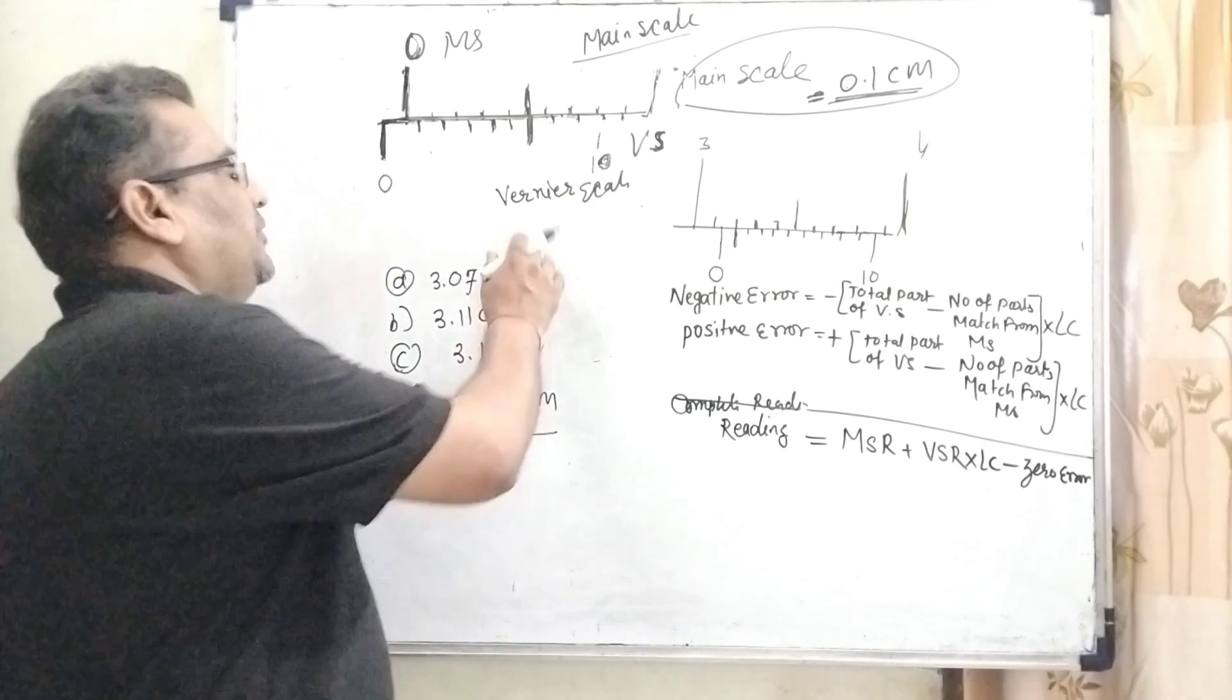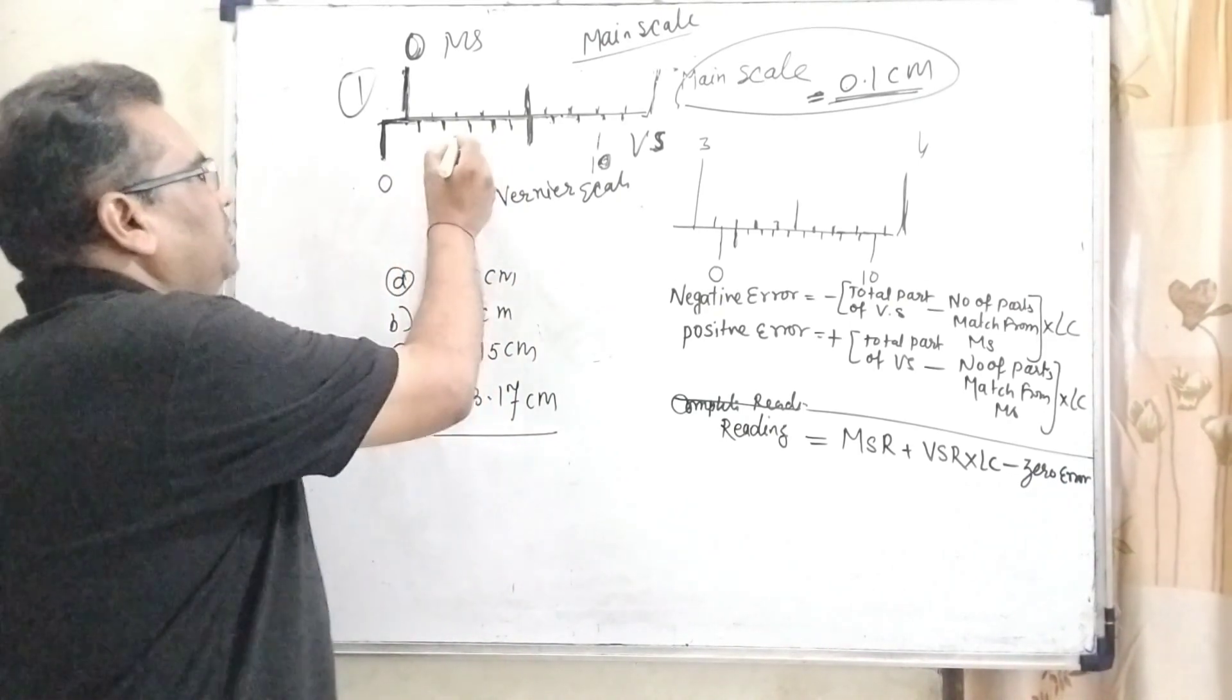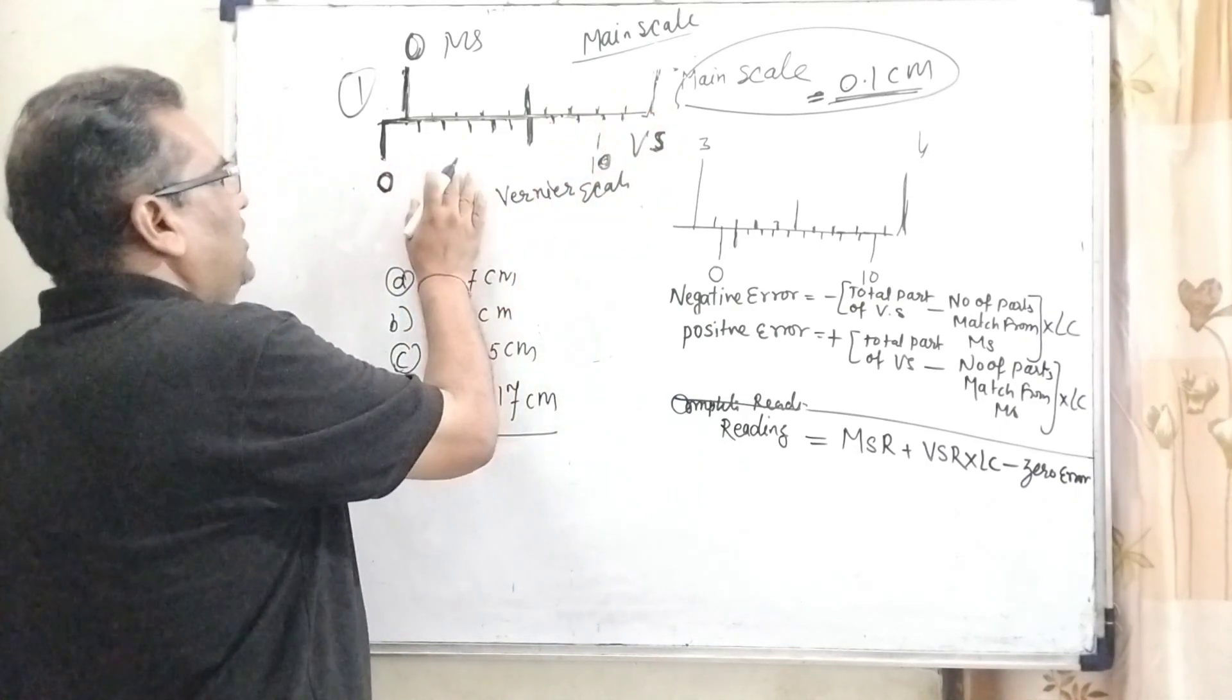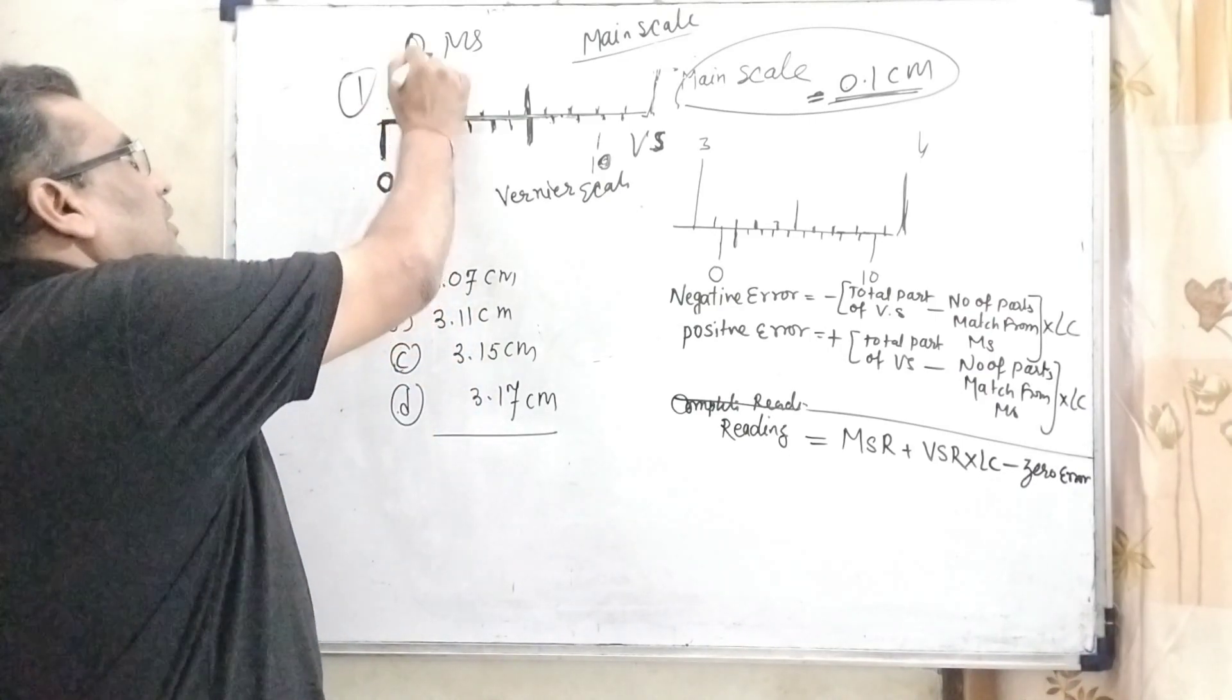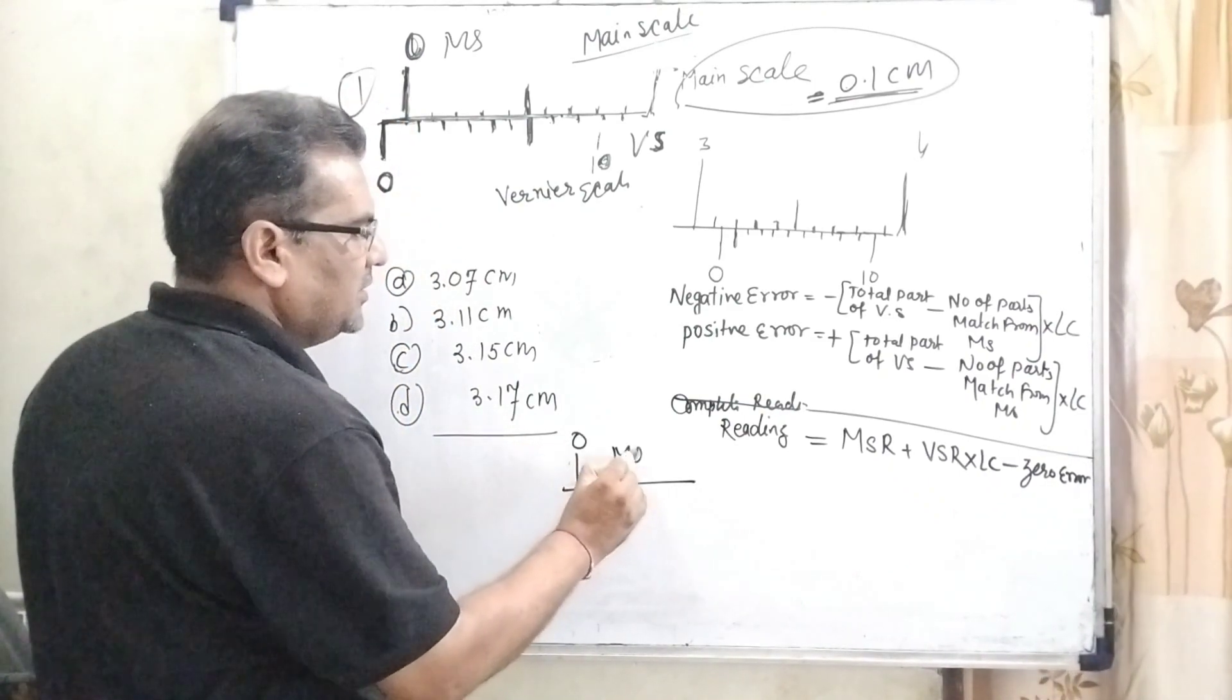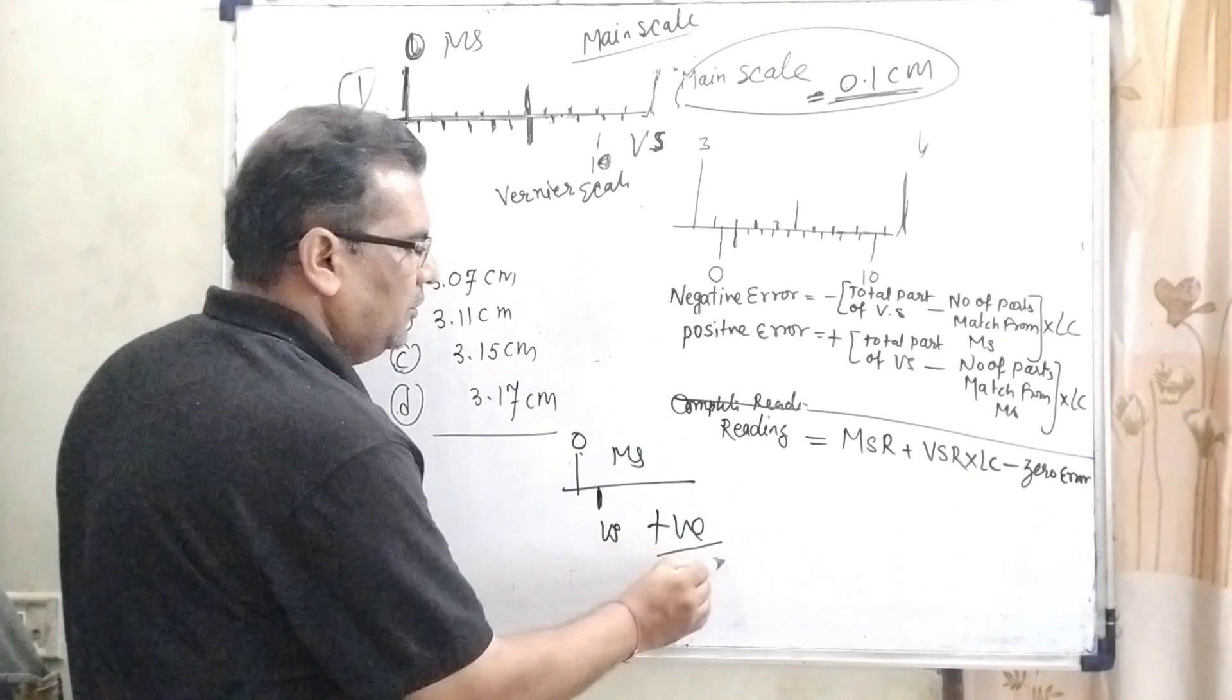Now here, given on the left side, this diagram, the first diagram shows some error. Here the upper scale shows the main scale, lower scale shows the Vernier scale, and the zero of the Vernier scale falls to the left side of the zero of the main scale. So we can say that is negative zero error. If the zero of Vernier scale falls to the right side, then we can say that is positive zero error.